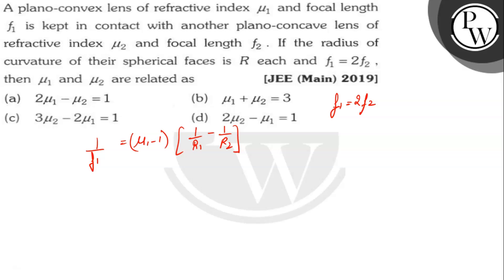Now, our focal length is for the plano-convex lens, so we have (μ₁ - 1) times (1/infinity - 1/R). This is a convex lens. So 1/infinity minus 1/R equals minus R.